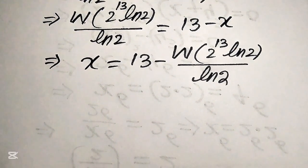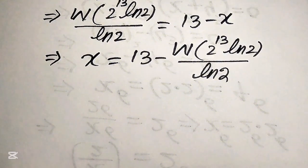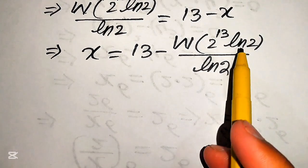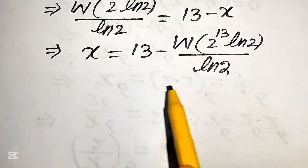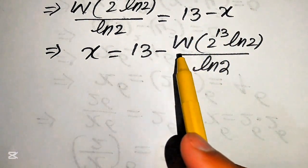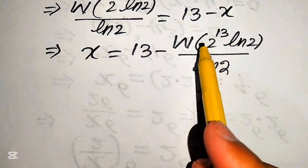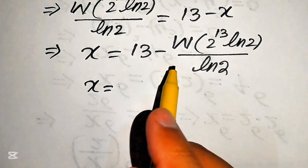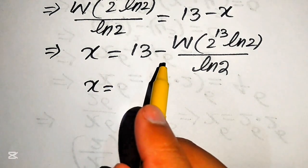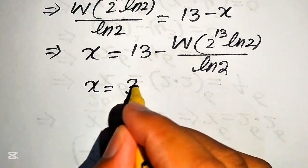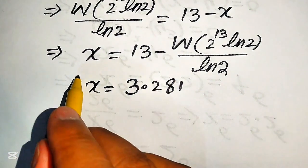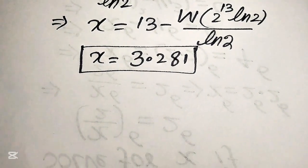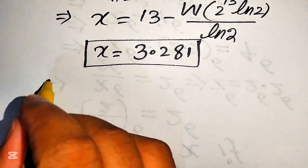This is the final expression for x. Using an online calculator or Wolfram Alpha, you can easily get the exact numerical value of the Lambert W function. After applying the online calculator, the simplified answer is x approximately equals 3.281, which is our final answer.